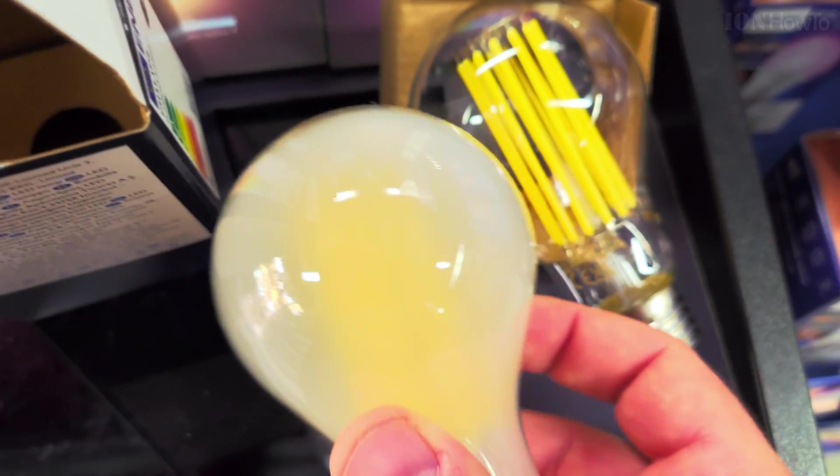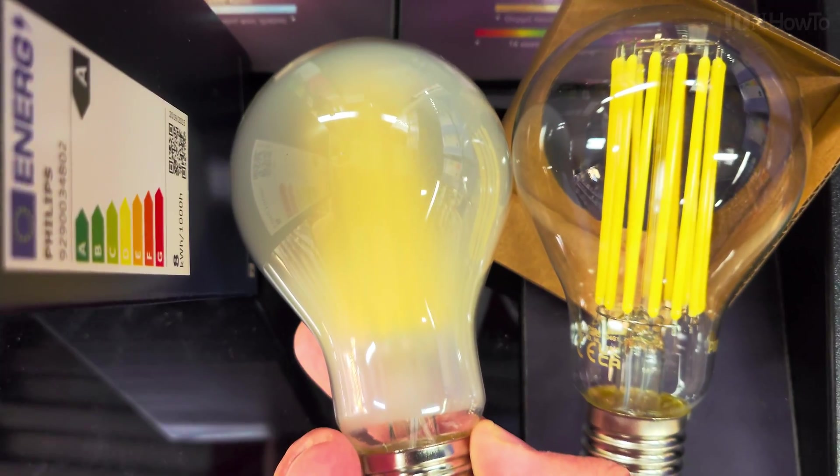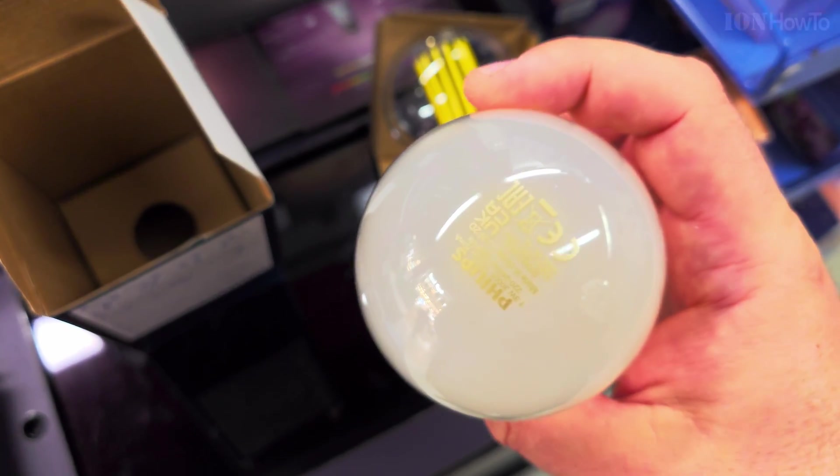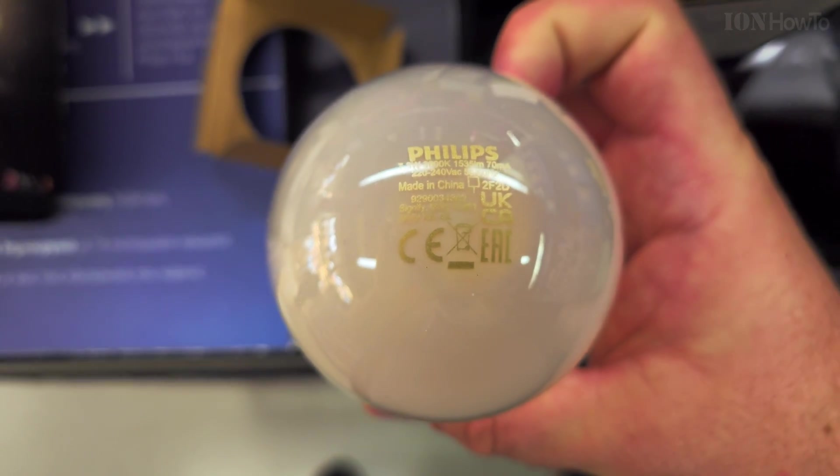This is nice if you want to see the filaments, but I prefer the one with frosted glass so there's more diffusion and less chance of seeing the harsh light. These are really the same light bulb, the only difference is frosted versus clear glass. You can actually see the LED filaments.